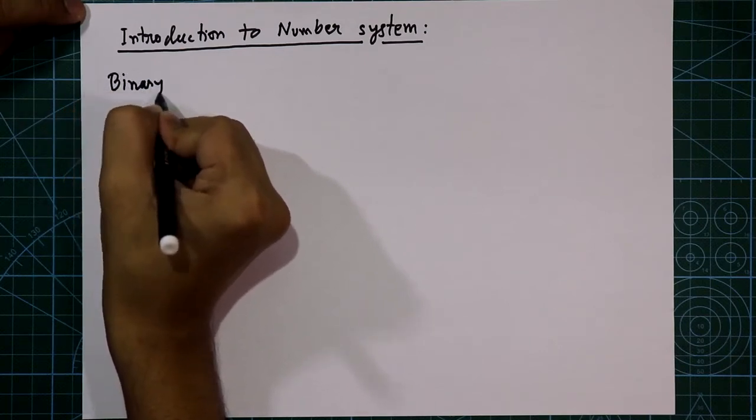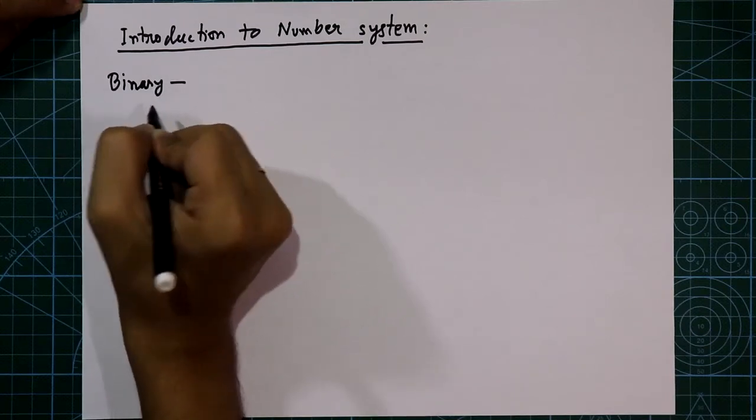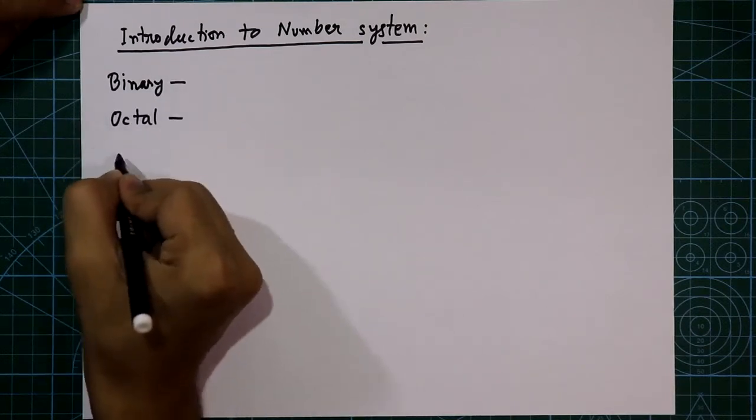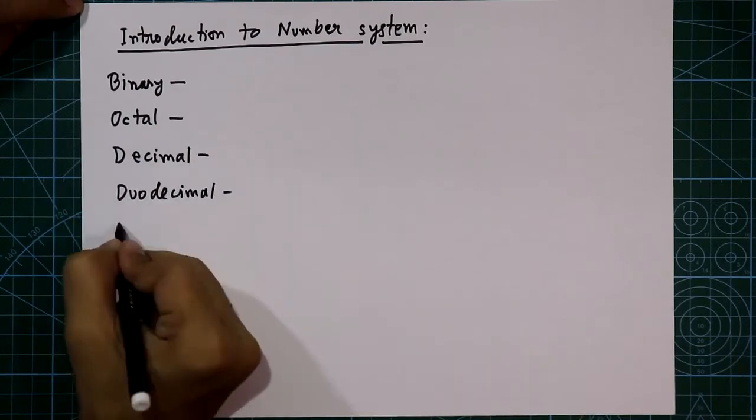We can also use the same quantity in other number systems like binary, octal, decimal, duodecimal and hexadecimal.